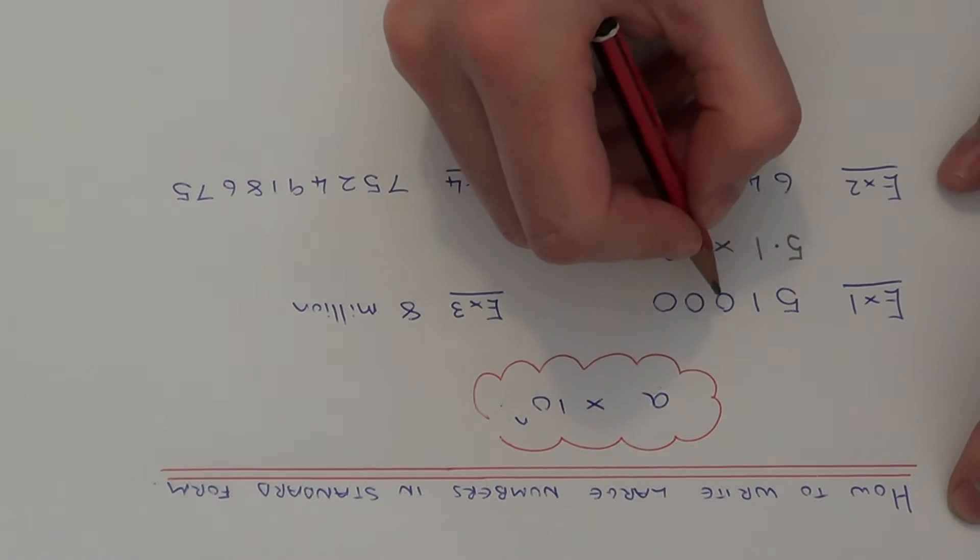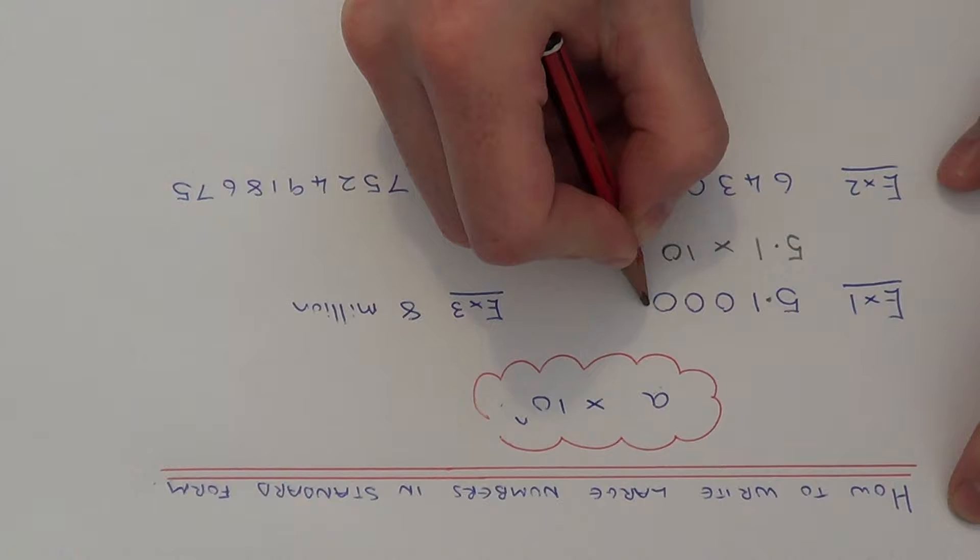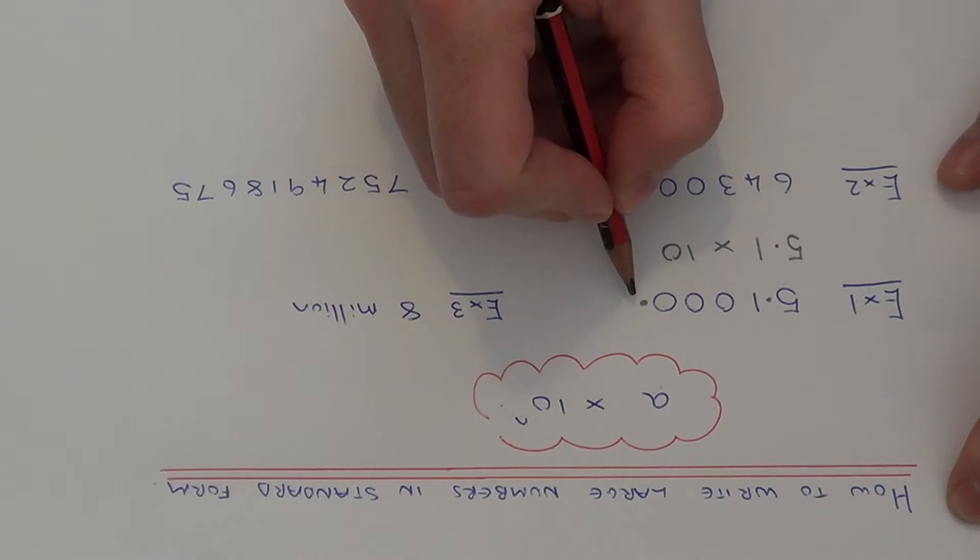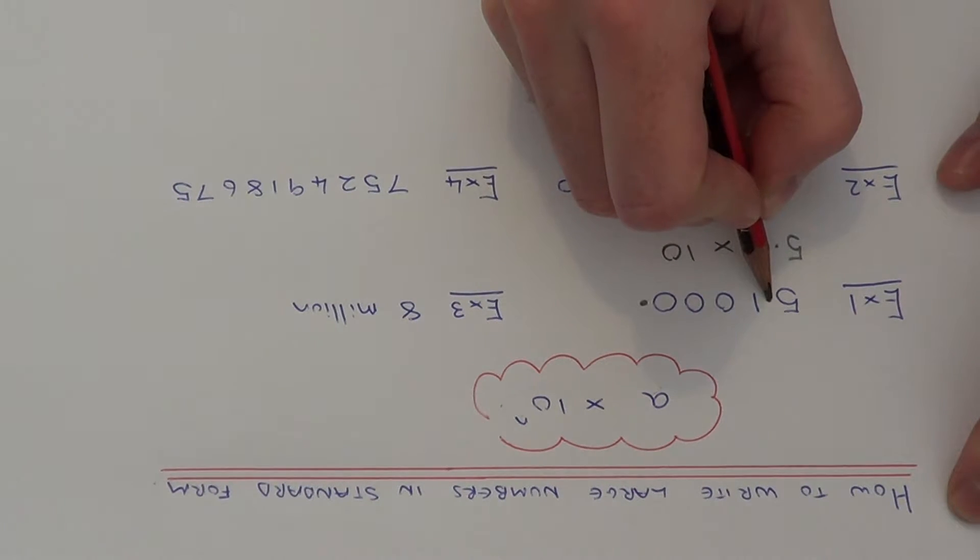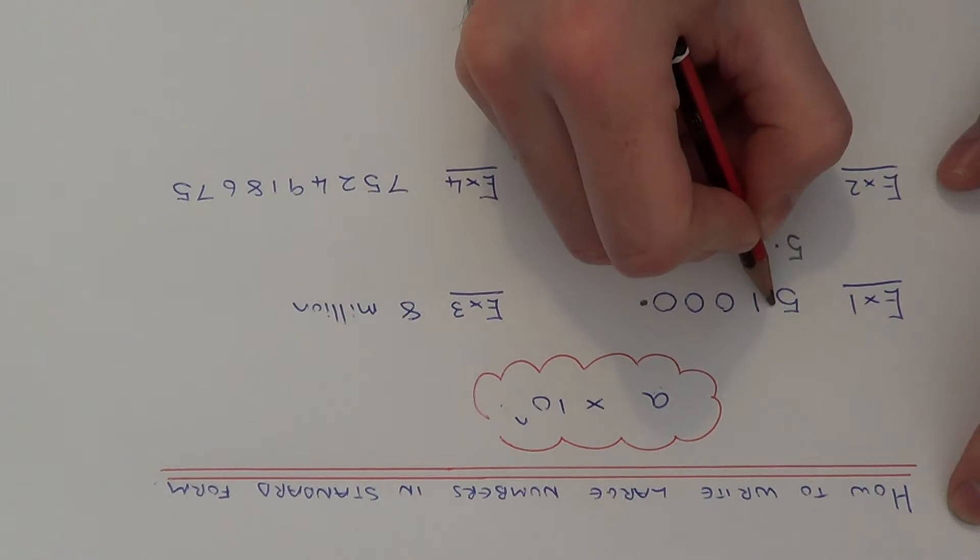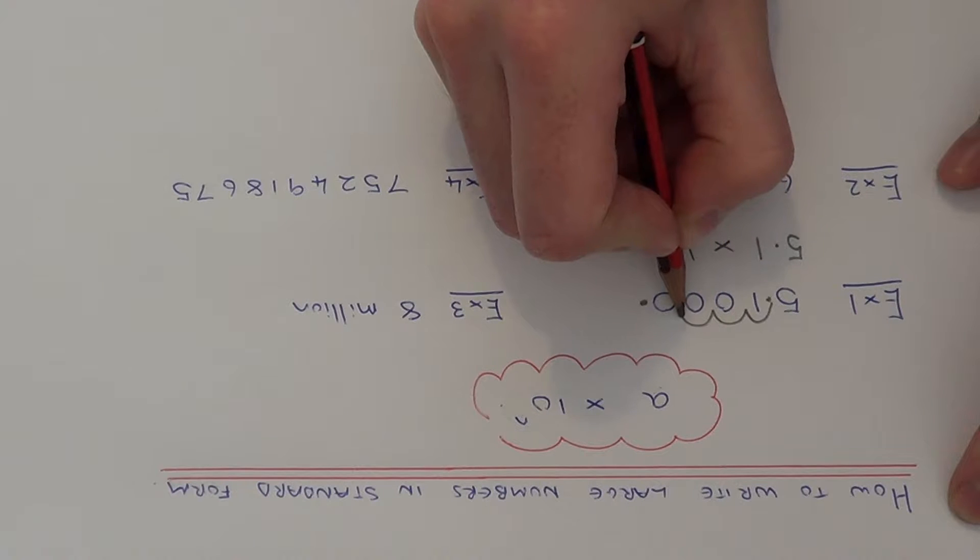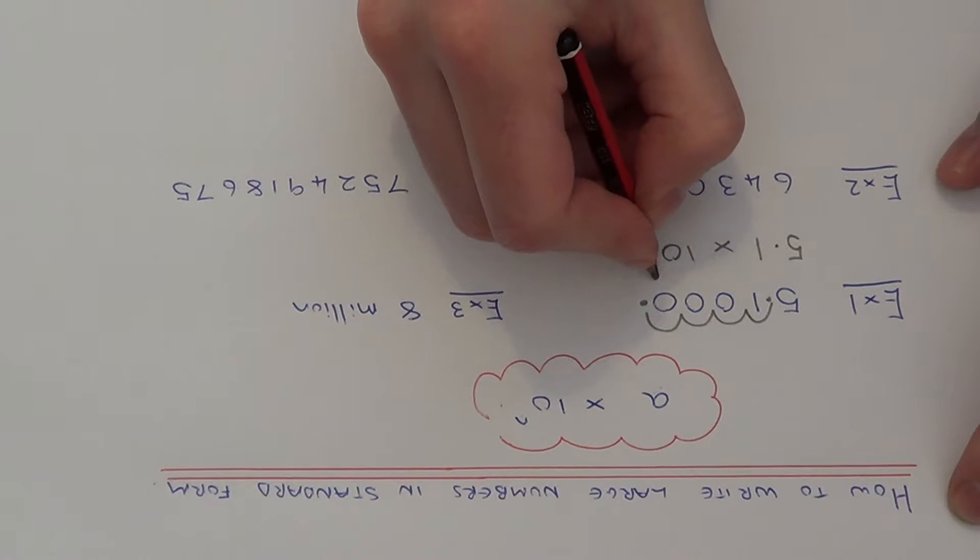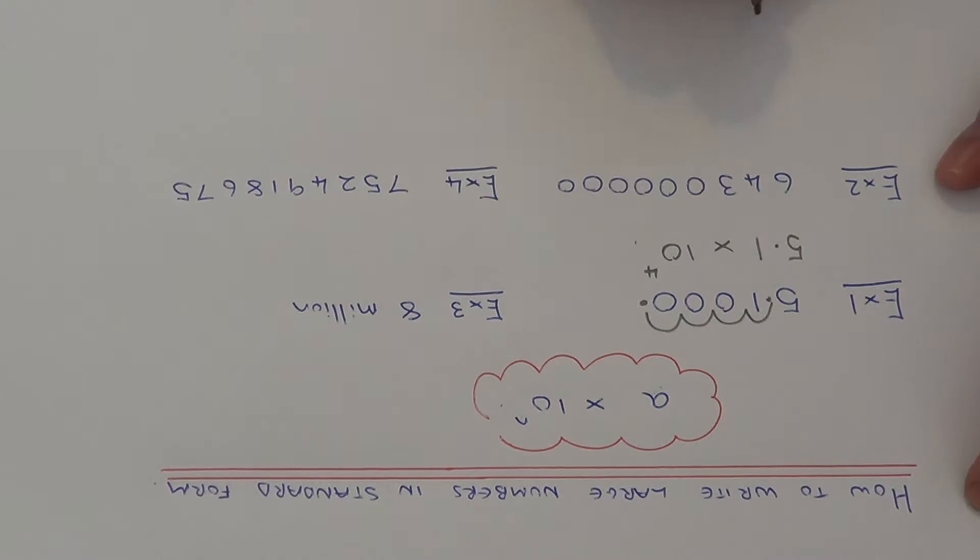The easiest way to do this is to count how many places you move the decimal point. So originally the decimal point was here, and we put it here. So how many times has it been multiplied by 10? Well, that's 1, 2, 3, 4. So we put the power of 4 there.